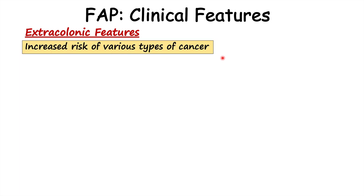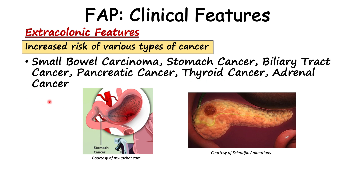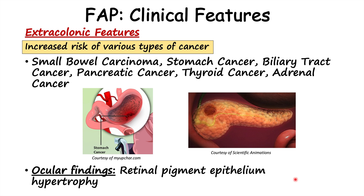Some other clinical features of familial adenomatous polyposis are extracolonic features — outside of the colon. Because the APC protein is a tumor suppressor involved in suppressing growth and proliferation, issues with APC increase the risk of many different cancers, including small bowel carcinoma, stomach cancer, biliary tract cancer, pancreatic cancer, thyroid cancer, and adrenal cancer. There are also ocular findings: hypertrophy of retinal pigment epithelial cells, which can occur early in life and is found in roughly two-thirds of FAP patients, raising clinical suspicion for the condition.